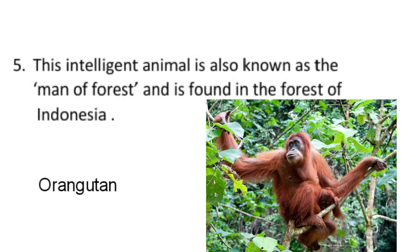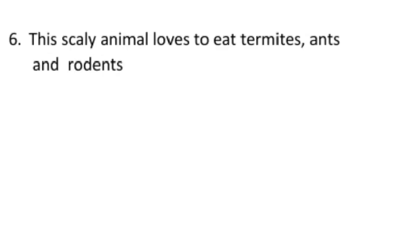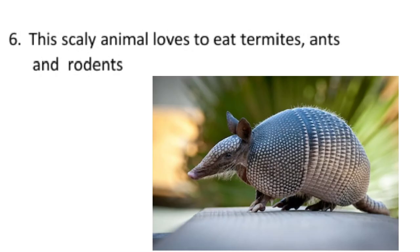Now question number 6: this scaly animal loves to eat termites, ants and rodents. It looks quite like a rat but it is not a rat — it is armadillo. It is a small mammal with a shell of armored plates that protect them from predators. With their long sticky tongue, armadilloes catch ants, beetles, termites and insects after digging them out of the ground. So we will write here armadillo.